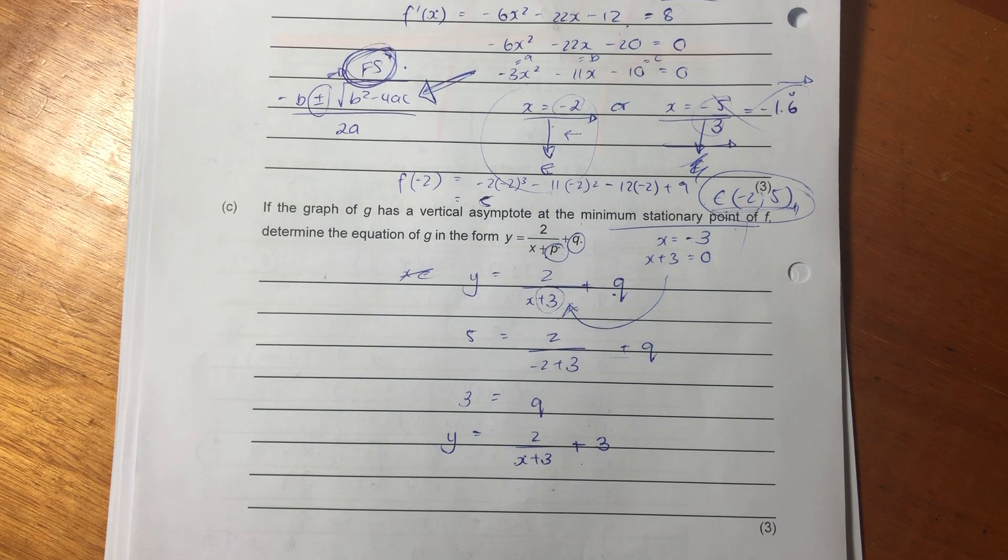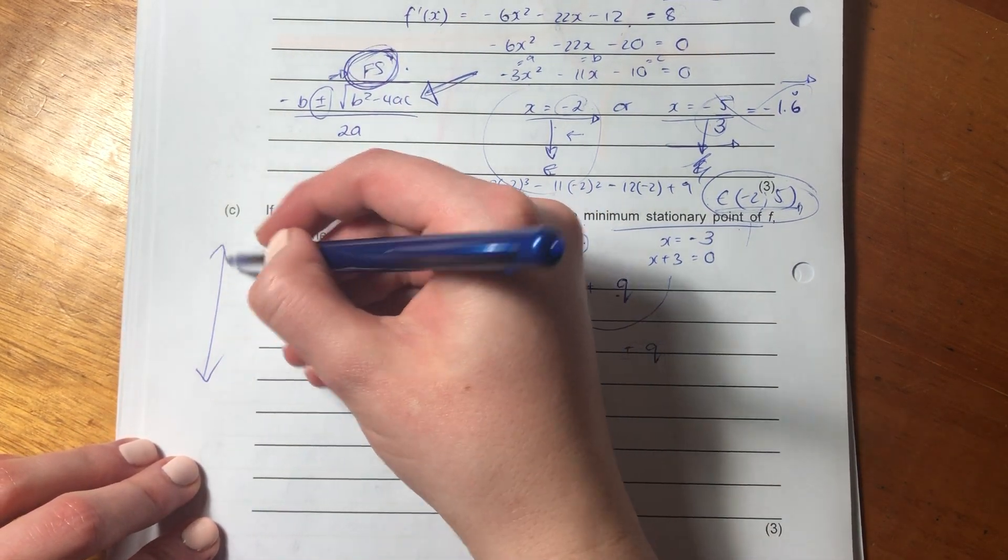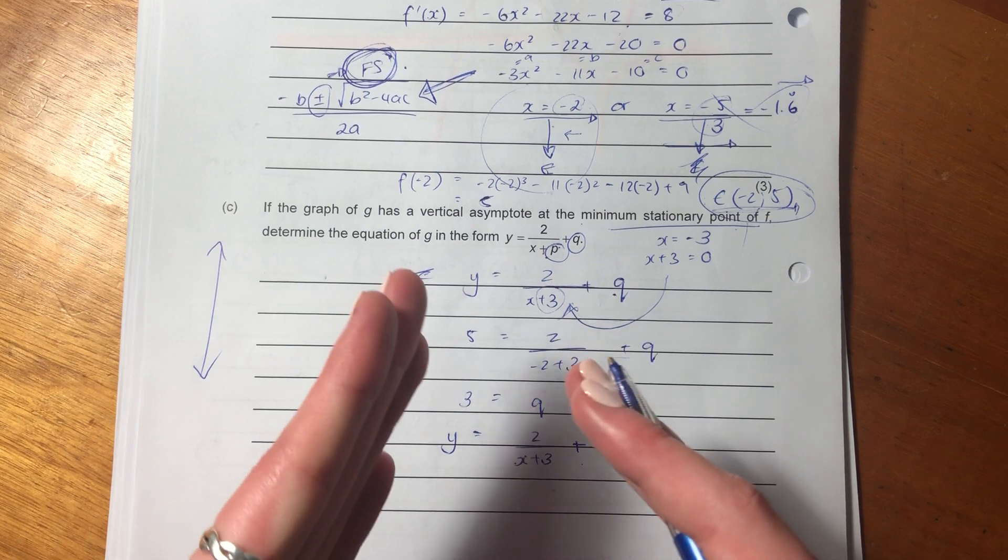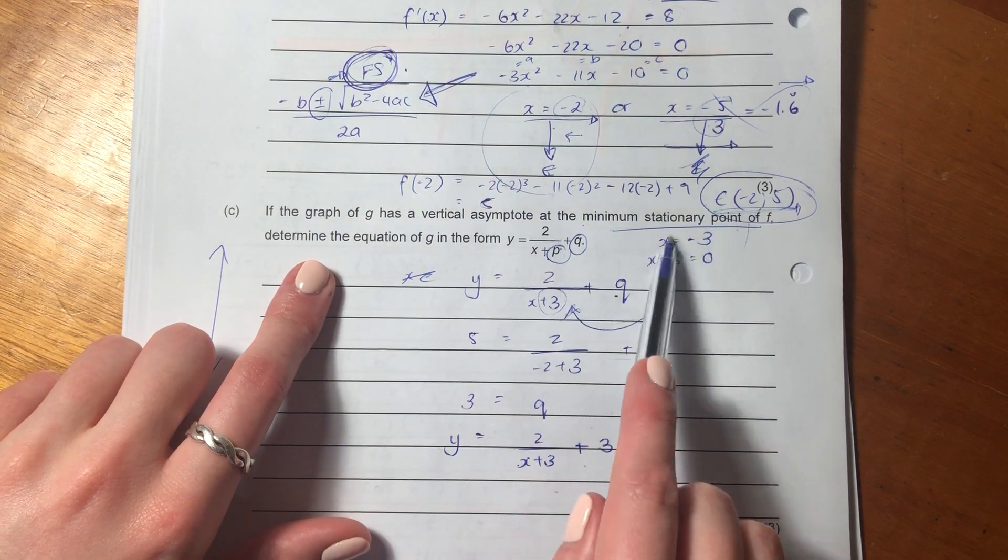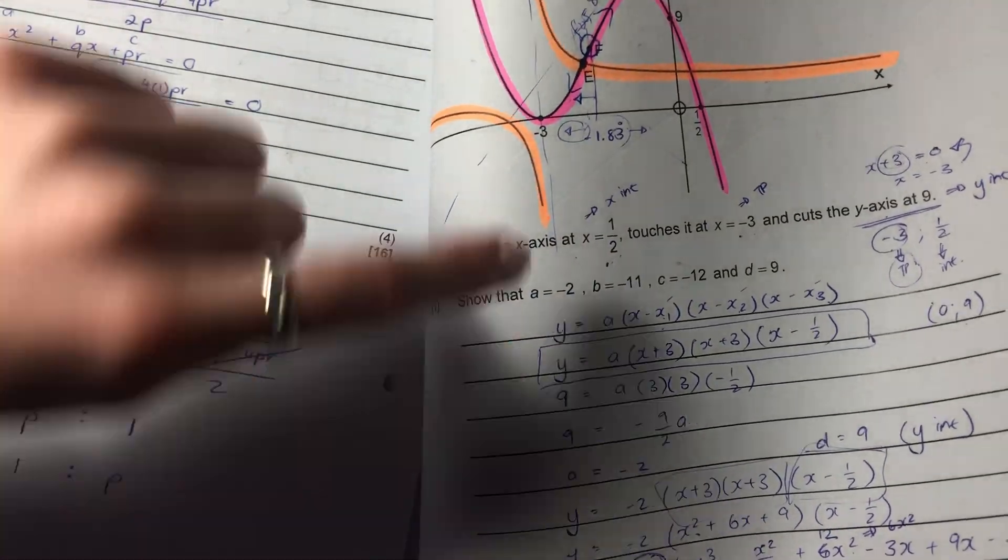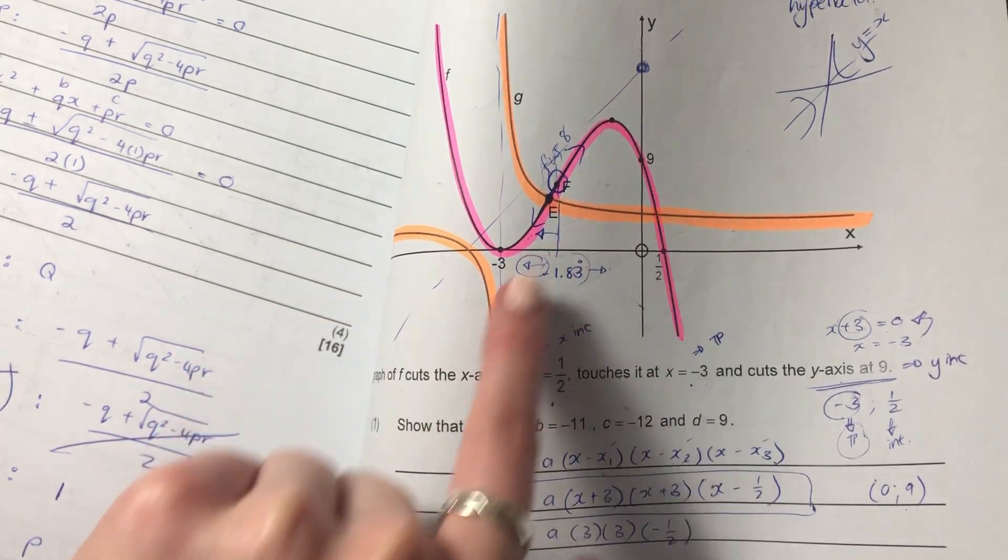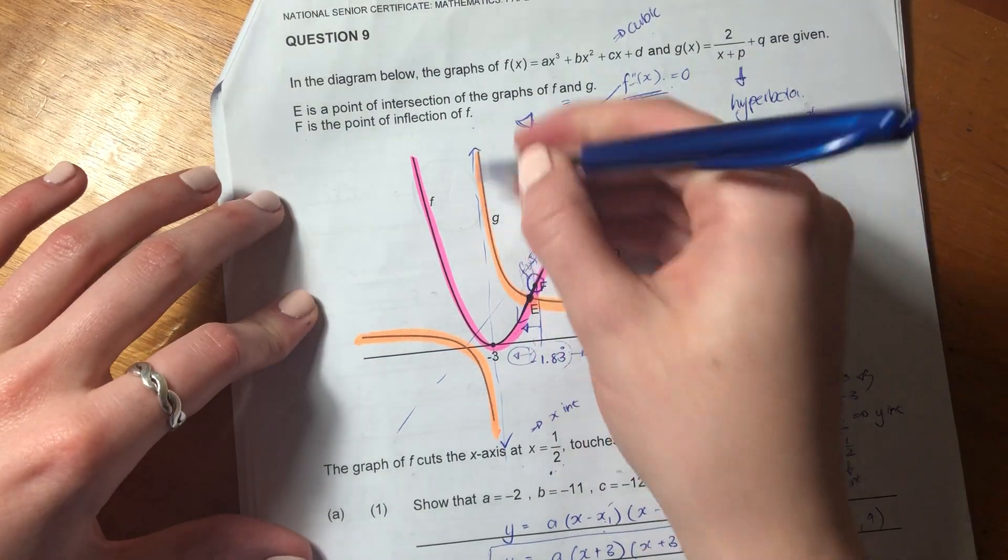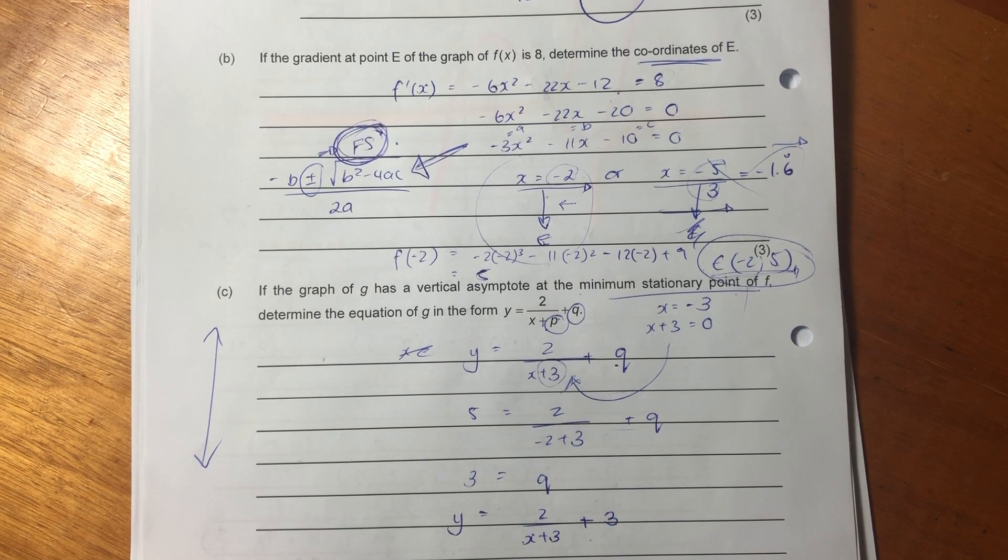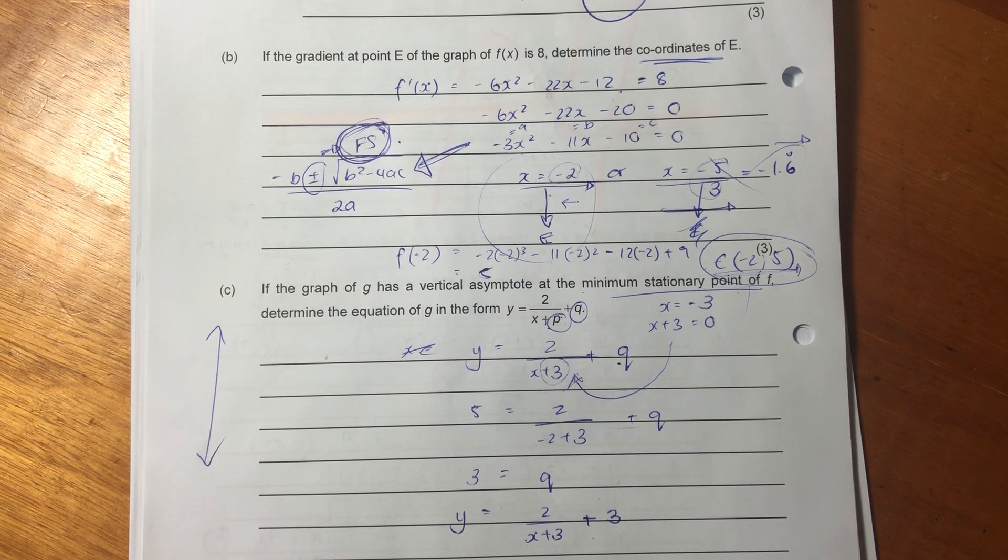Tricky question that one actually, even though it was only for three marks. It was one that actually completely floored me last night and then came to me. But I just want you to really understand the different tools we can use when we do questions like this. Let's now go to C. So it says if the graph of G has a vertical asymptote, that means like this. Remember, vertical asymptote, and remember an asymptote means the function gets close to that point but never actually touches it. Then it says at the minimum stationary point of F. So what is the minimum stationary point of F? It is -3 because that's the maximum stationary point up there, but the -3 is the minimum. So effectively this line here is our asymptote of G at -3.